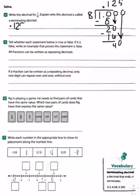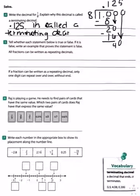The decimal is 0.125. It's called a terminating decimal because it stops. Terminating means stops.